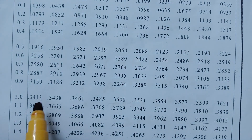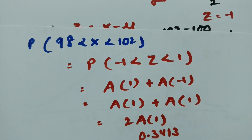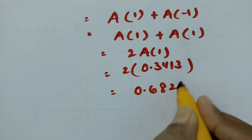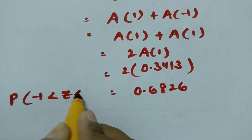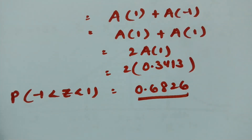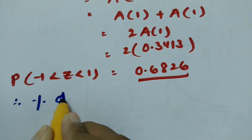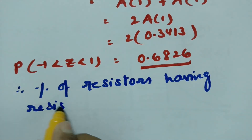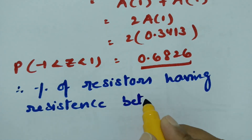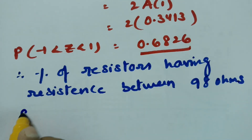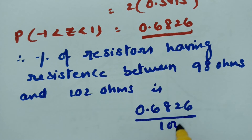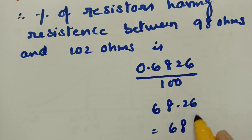From the z-table, the area from z = 0 to z = 1 is 0.3413. Therefore, the total area = 2 × 0.3413 = 0.6826. So P(−1 < z < 1) = 0.6826. Converting to percentage: 0.6826 × 100 = 68.26%, which is approximately 68%.